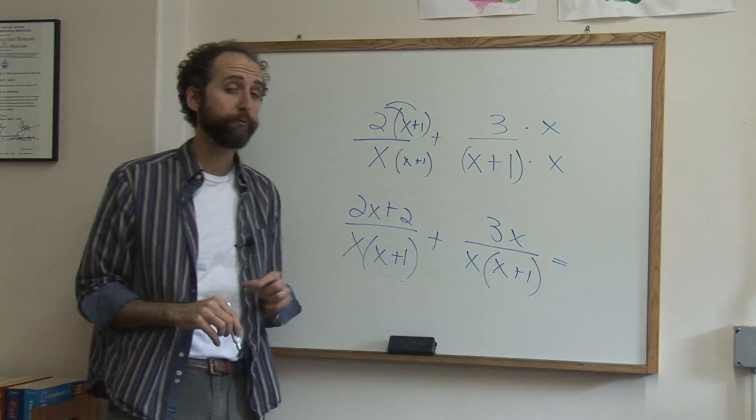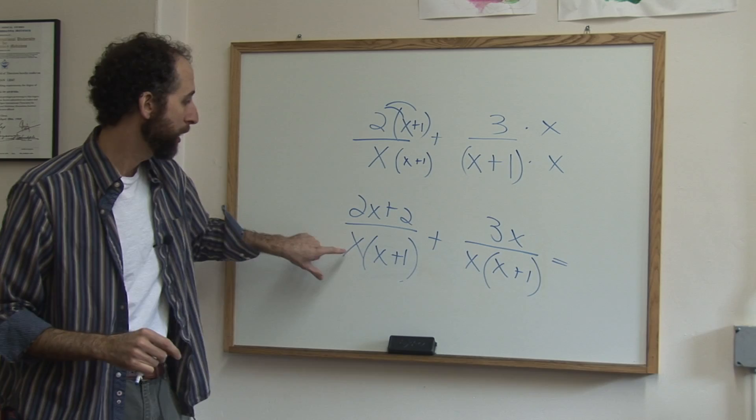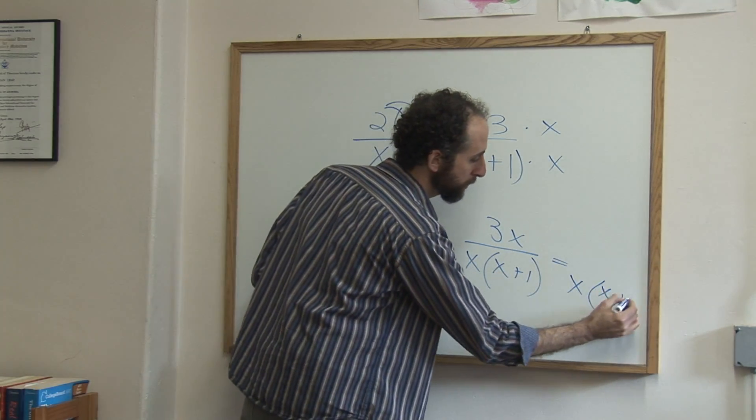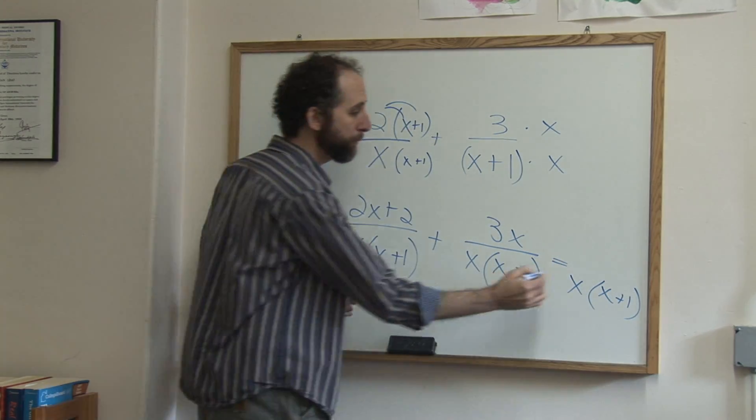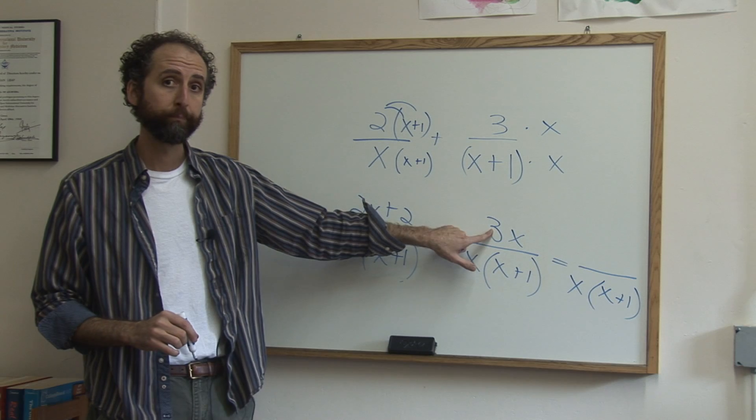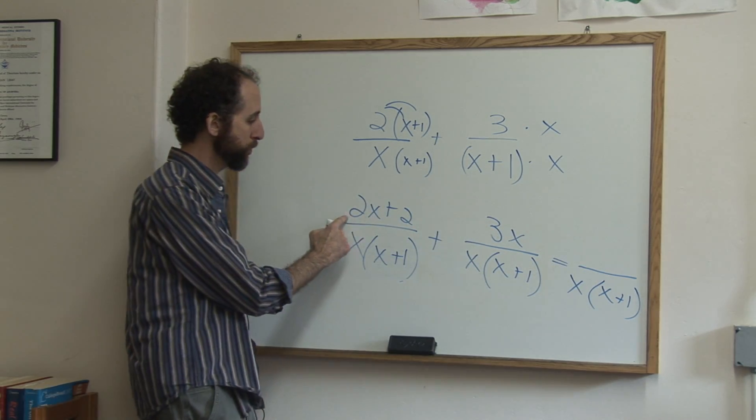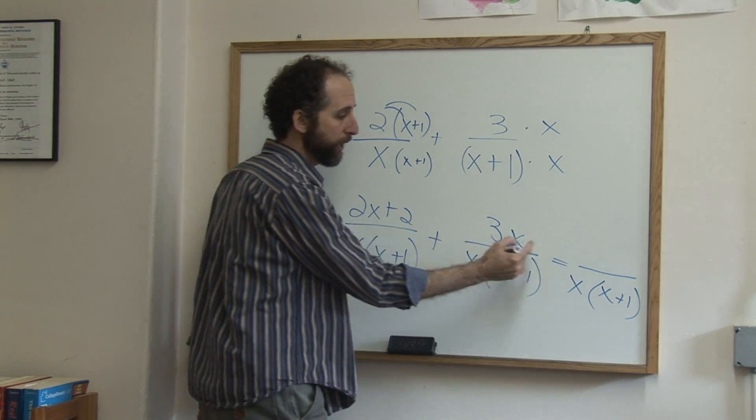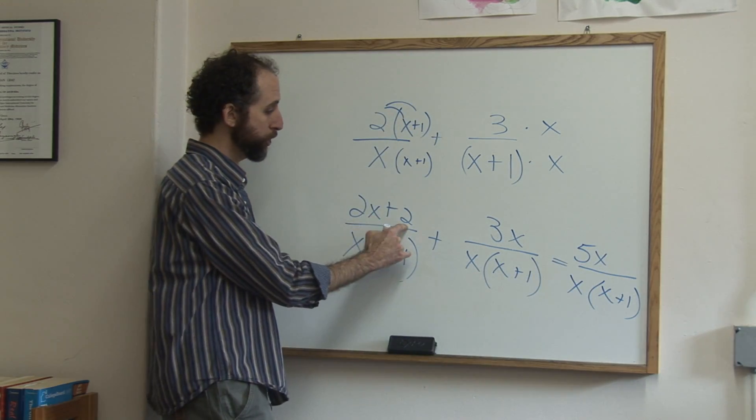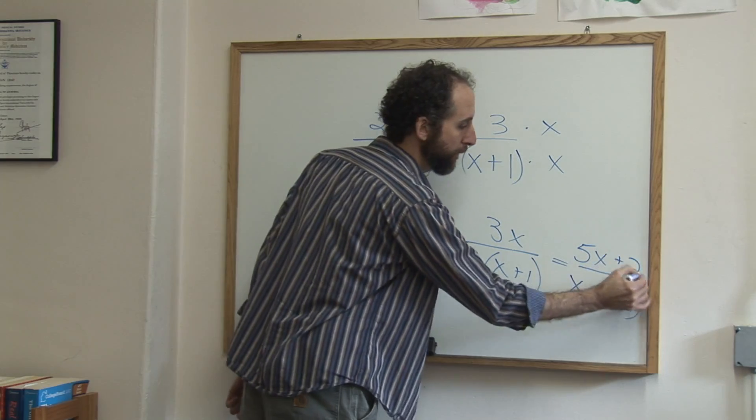Now just like normal fractions, just like adding normal fractions, you carry the bottom over, this is your common denominator. So it's x times x plus one. And the top, just like normal fractions, you add this plus that. So we're going to collect like terms. Two x plus three x is five x and then the two doesn't have a common term, so we just copy it.